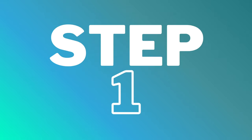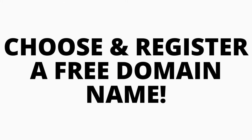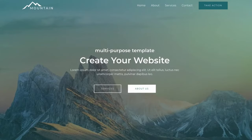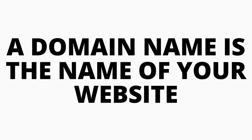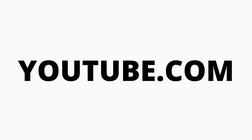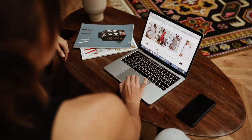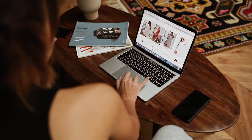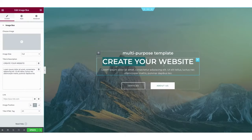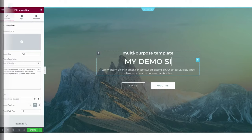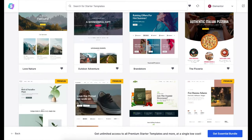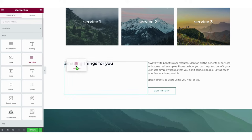The first step I'm going to cover is how to choose and register your own domain name for free. A domain name is the name of your website — for example, YouTube's website name is youtube.com. Step 2 covers how to choose a hosting provider, which is like the physical storefront of your website. Step 3 goes over everything WordPress, including creating your site using professional pre-made templates and a drag and drop editor. Let's get started.